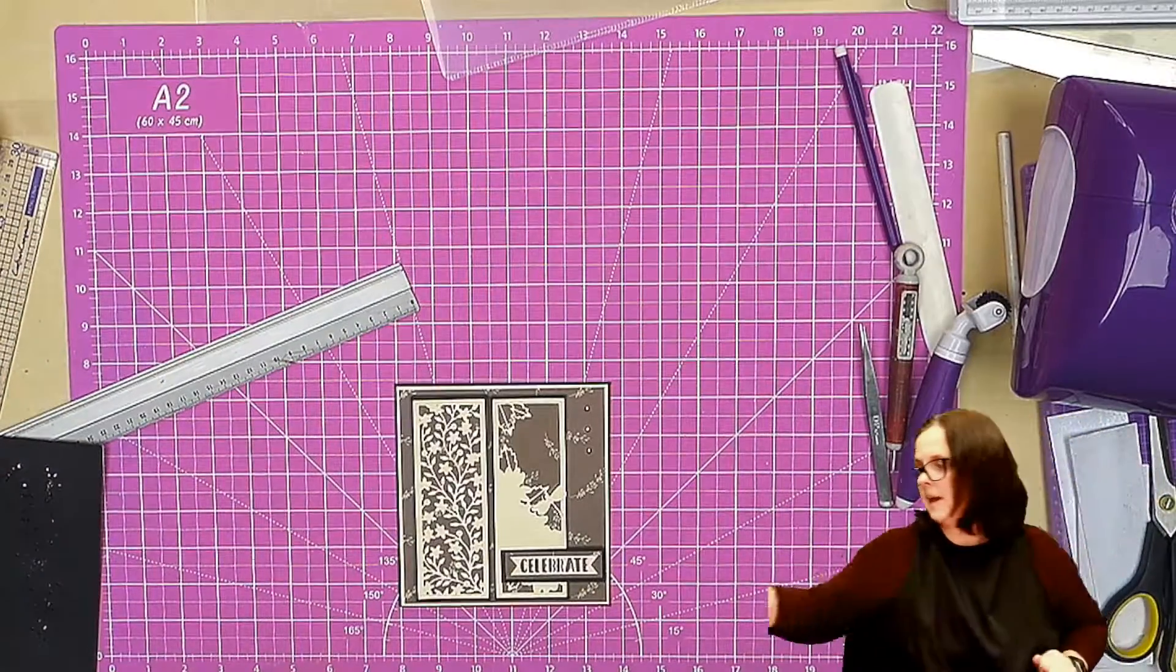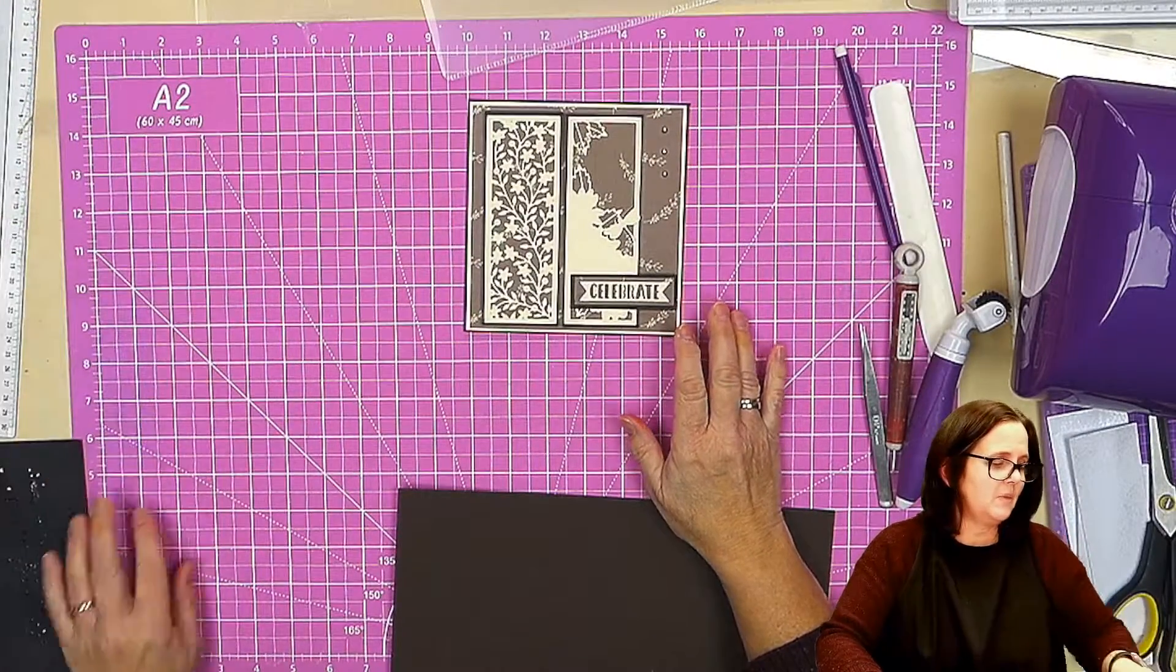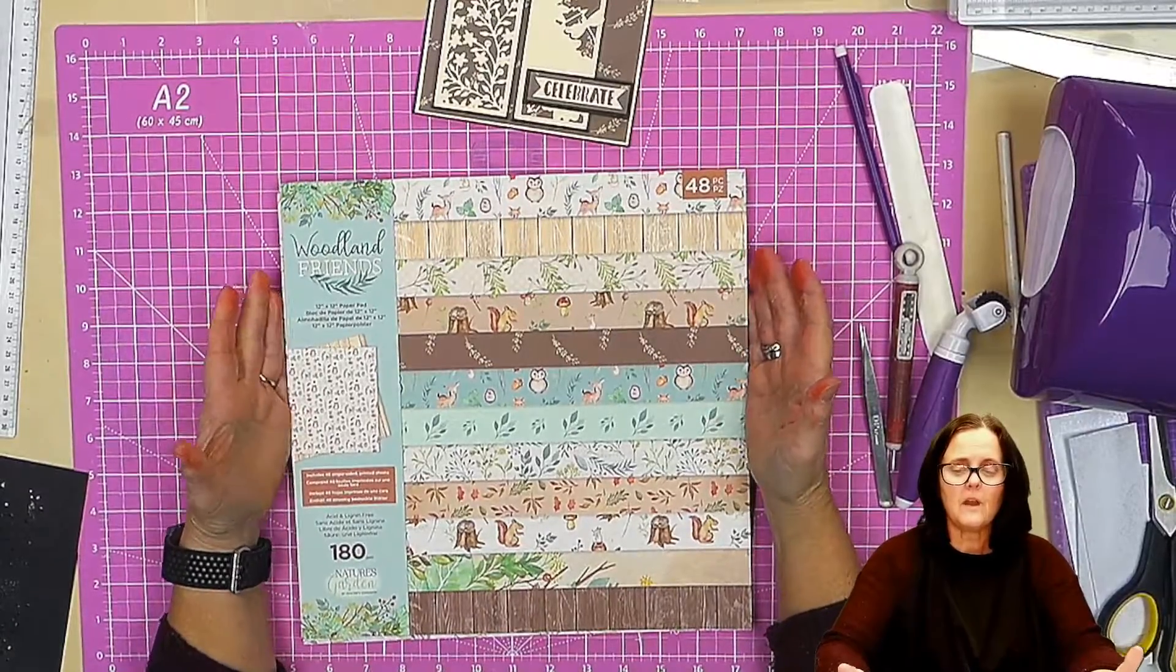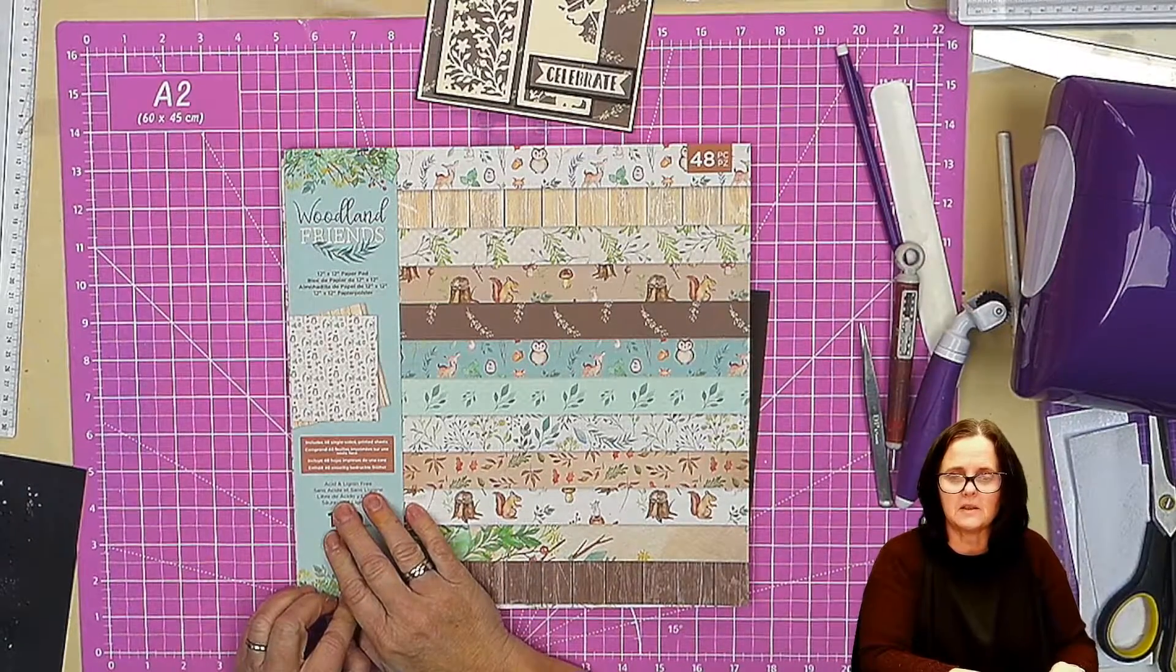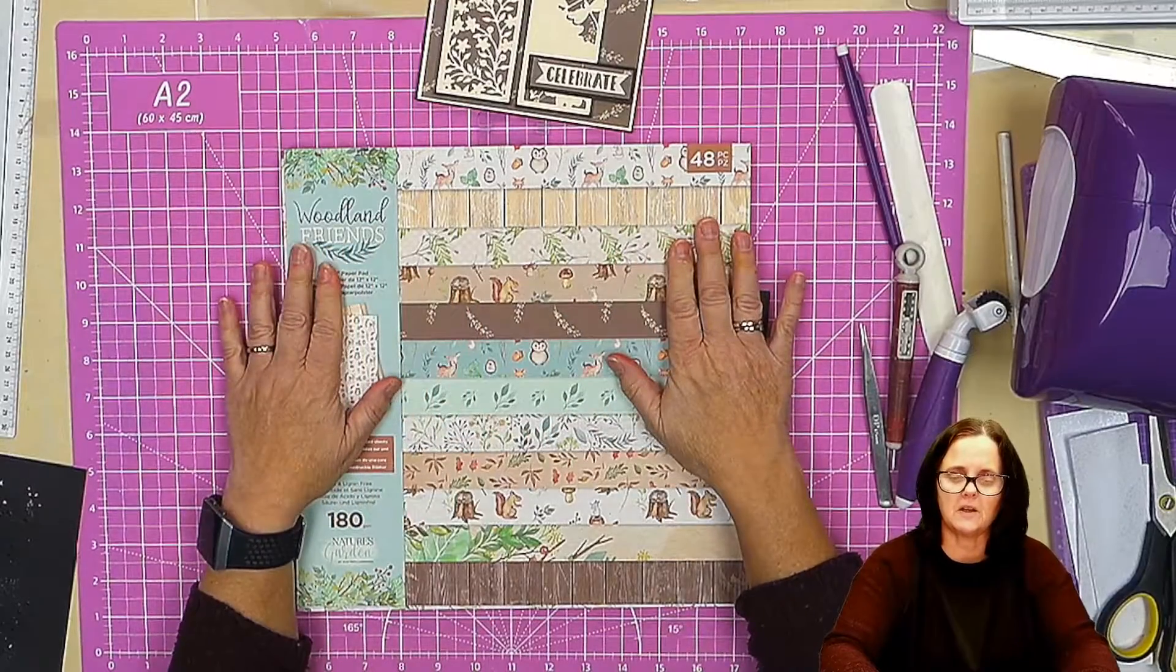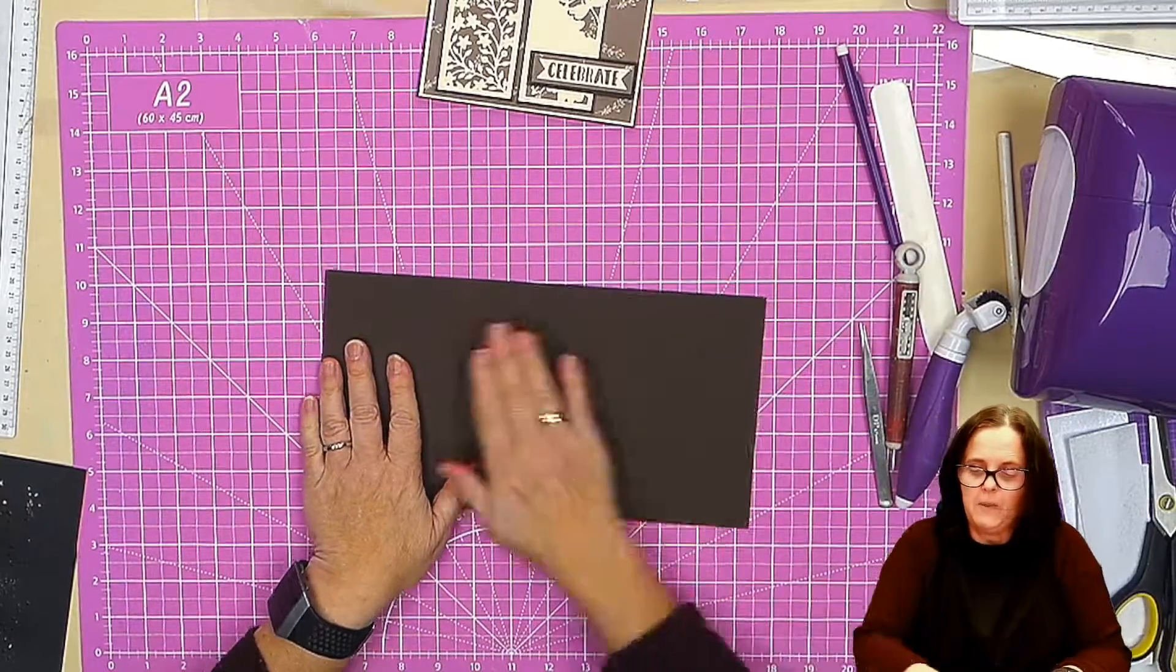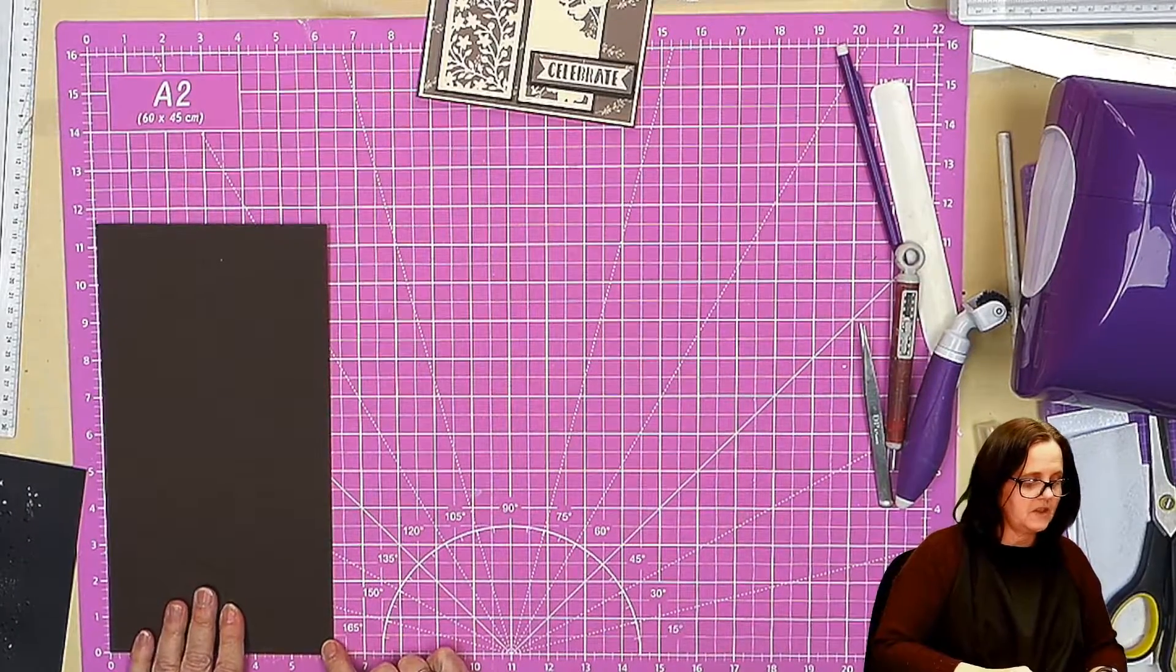I have just used some brown card from my stash. The reason I went with it is because of this paper. I rather like that paper, and that paper is from this 12 by 12 paper pad, Woodland Friends, part of the Nature's Garden set from Crafter's Companion. This has some beautiful little papers. I have a piece of brown card, taken an A4 piece and cut it down, looks like I've gone just over six inches, roughly six inches.